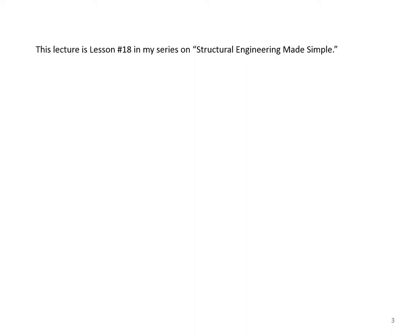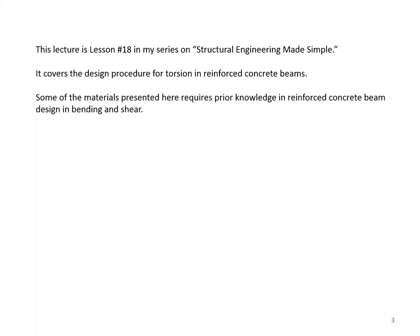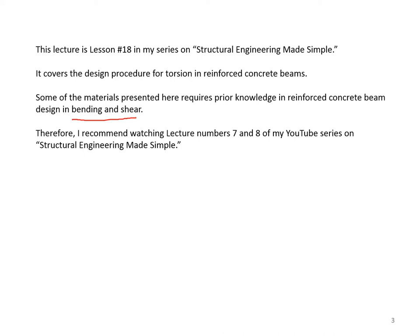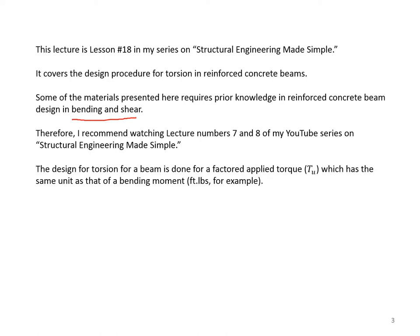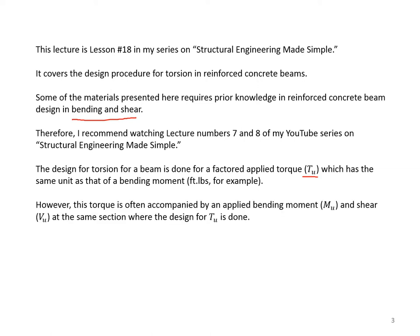This lecture is number 18 in my series on structural engineering made simple. It covers the design procedure for torsion in reinforced concrete beams. Some of the materials presented here requires prior knowledge in reinforced concrete beam design in bending and shear. I recommend watching lecture number seven and eight of my YouTube series. The design for torsion is done for a factored applied torque Tu, which has the same unit as a bending moment, such as foot-pounds. However, this torque is often accompanied by an applied bending moment Mu and shear Vu at the same section.